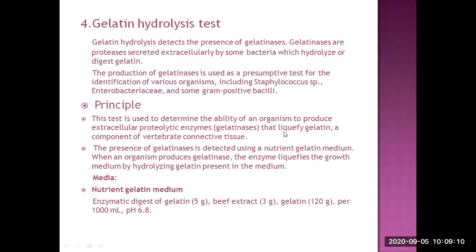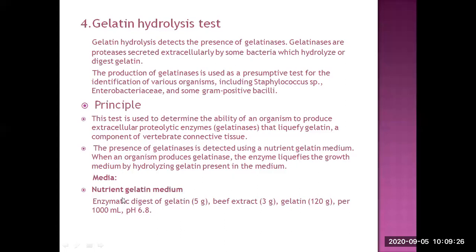If this enzyme is produced, it will cause gelatinase liquefaction. We take our nutrient medium, place the bacteria in it, and check whether liquefaction occurs. The nutrient gelatin medium contains: Gelatin 5g, Peptone 50g, Gelatin 120g per 100ml, and pH 6.8.